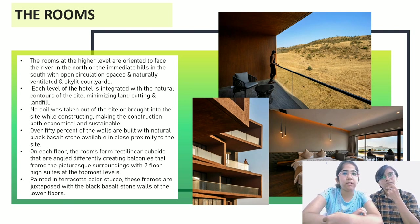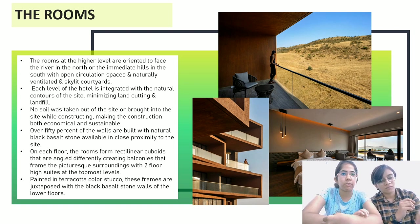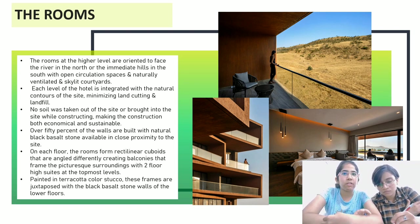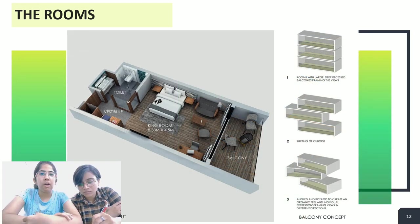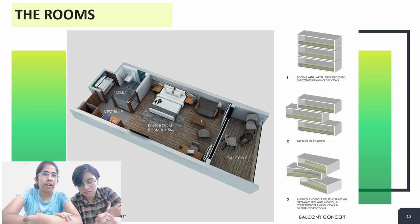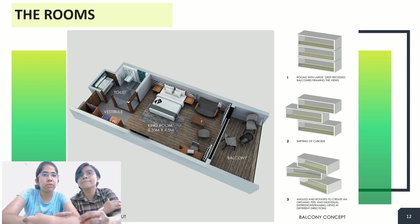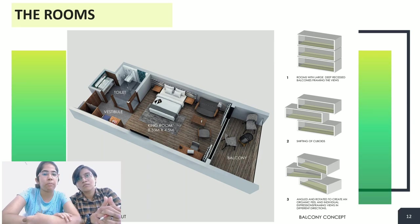Over 50% of the walls are built with natural black basalt stone, which is available in close proximity. Local materials are used and none of the resources are wasted. On each floor, the rooms form rectilinear cuboids that are angled differently, creating alcoves that frame the picturesque surroundings, with two-floor-high suites at the topmost levels.